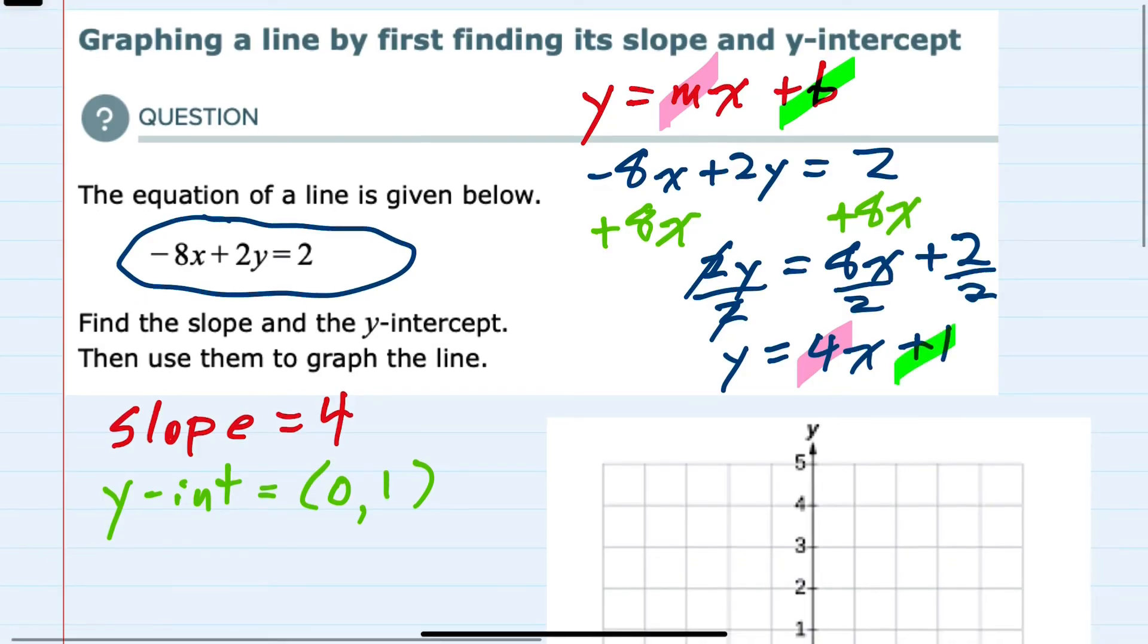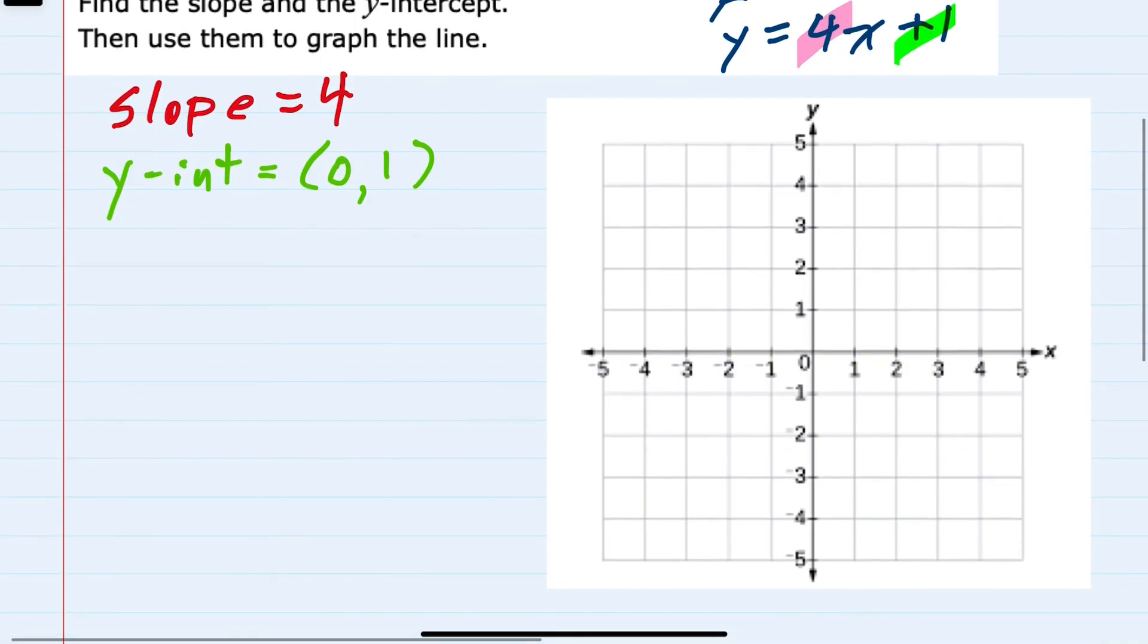So we have the slope and y-intercept. We can now graph by starting at the y-intercept (0, 1), then using the slope to find a second point. Since our slope here is 4, to write that as a fraction, I'll consider it 4 over 1.